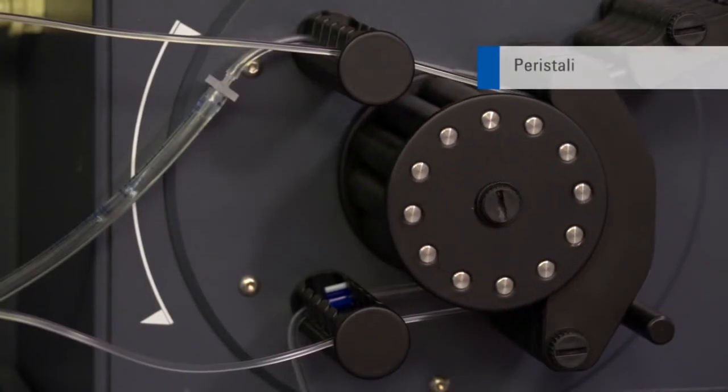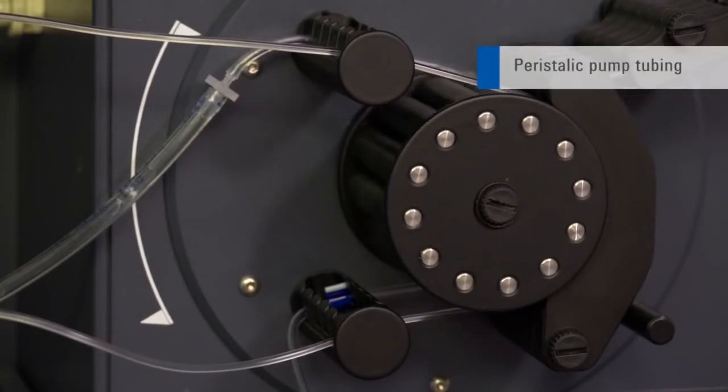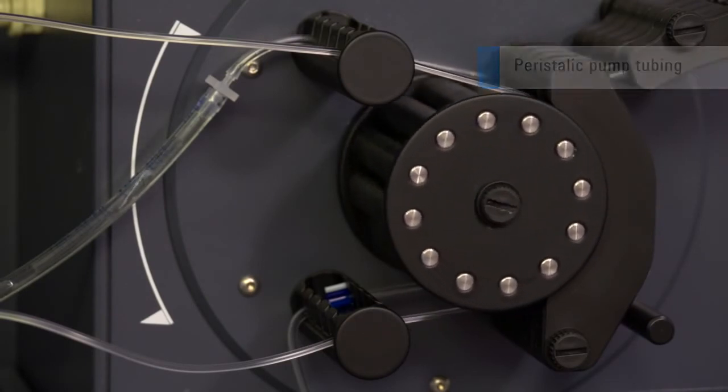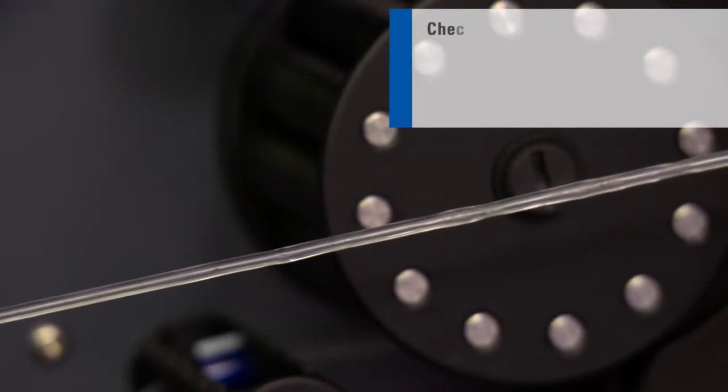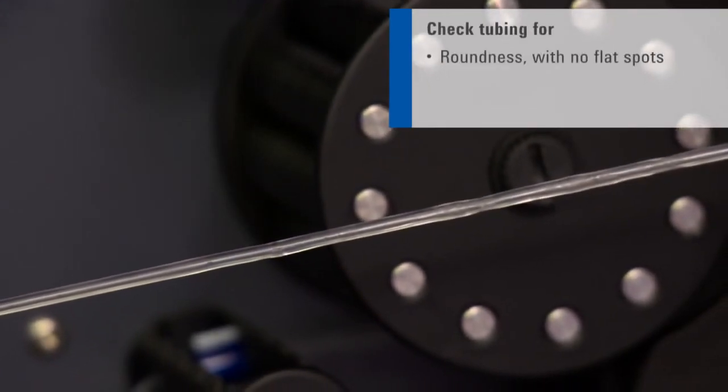Peristaltic pump tubing is also a critical component in maintaining good performance from your ICP-OES. When it comes to tubing, it is important to visually inspect periodically. Check that there are no flat spots on the tube.